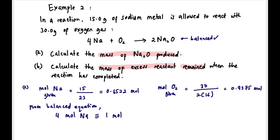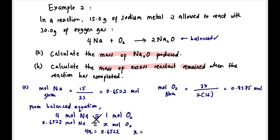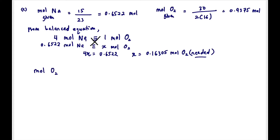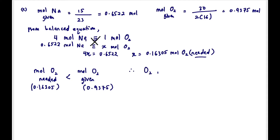From the balanced equation, 4 moles of Na reacts with 1 mole of O₂. Taking Na as reference: 0.6522 mol Na reacts with x mol O₂. Cross-multiplying: 4x = 0.6522, so x = 0.16305 mol O₂ needed. Comparing: 0.16305 mol needed vs 0.9375 mol given.